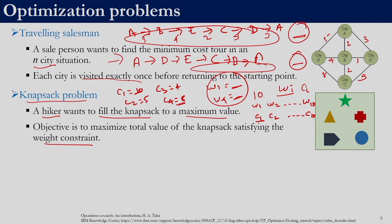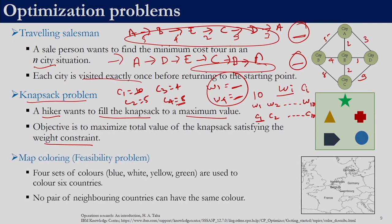Both the travelling salesman and knapsack problem are optimization problems. There is also something called a feasibility problem. In a feasibility problem we do not have an objective to be minimized or maximized, but we have a set of constraints that need to be satisfied. Map coloring is one such classical problem — here there are 6 countries: Netherlands, Belgium, Luxembourg, Germany, Denmark, and France. The task is to color each country such that no two neighboring countries are colored with the same color, using 4 colors: blue, white, yellow, and green.